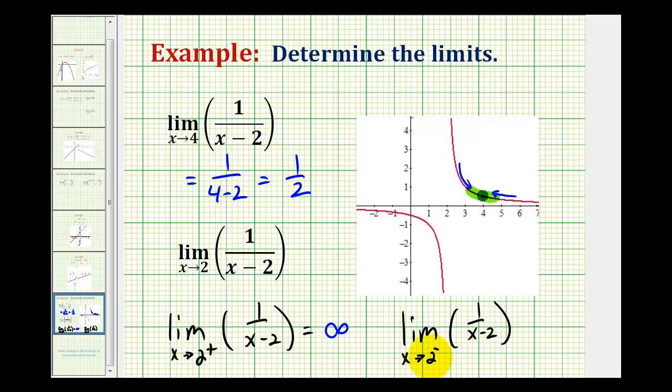And for the limit as x approaches two from the left or the negative side, notice how our denominator is always going to be negative because x is just a little bit less than two. So if we have one divided by a number that's very close to zero but negative, this limit is going to approach negative infinity. And of course, both of these don't exist.